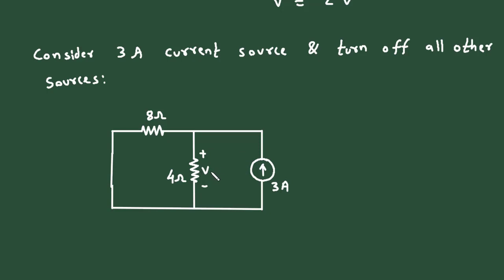The voltage in this configuration will be V double prime. We can find V double prime using the current division rule. Let's call the current through the 4 ohm resistor I₄Ω.